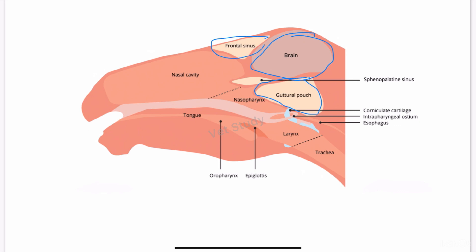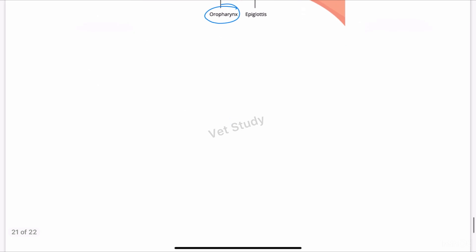Below the guttural pouch you can appreciate the pharynx. In the pharynx we have the nasopharynx, the oropharynx, and here the corniculate cartilage. This is the esophagus.